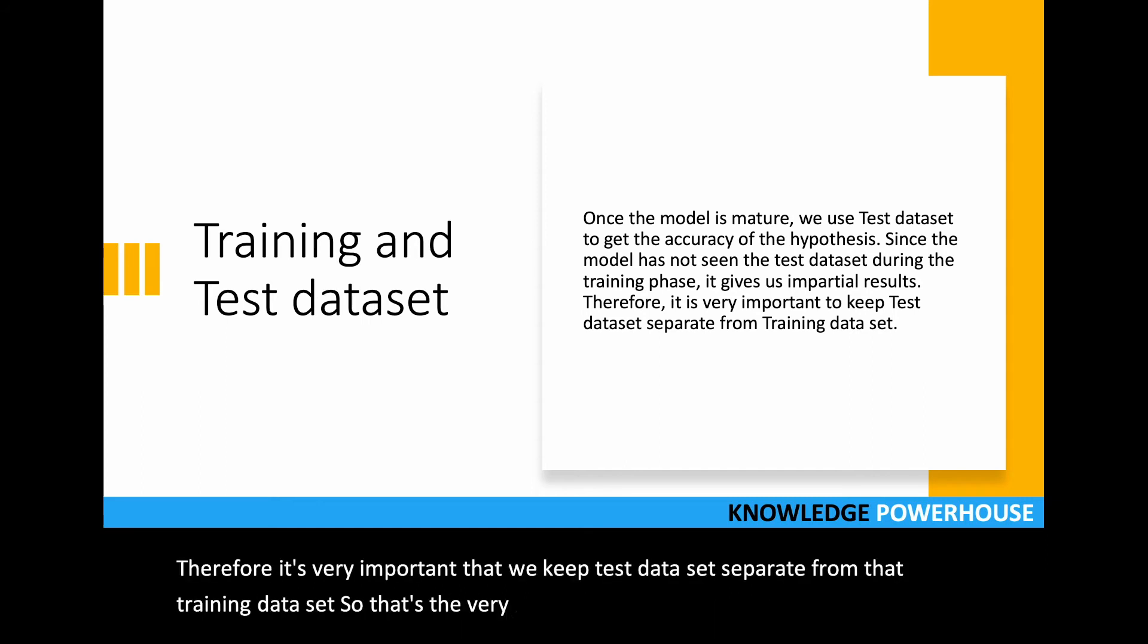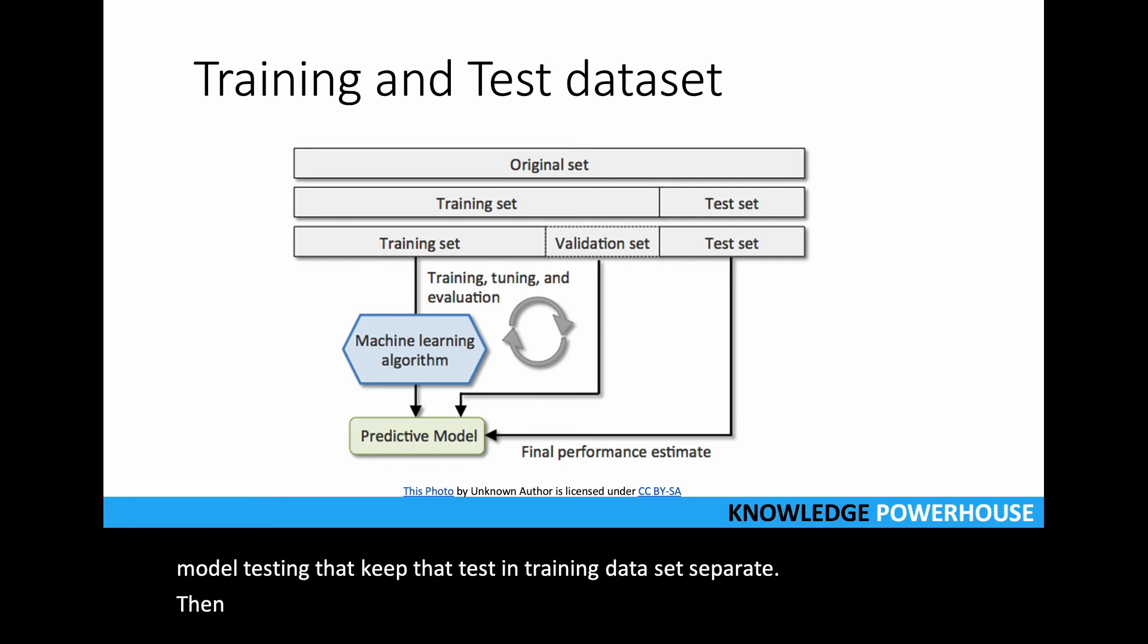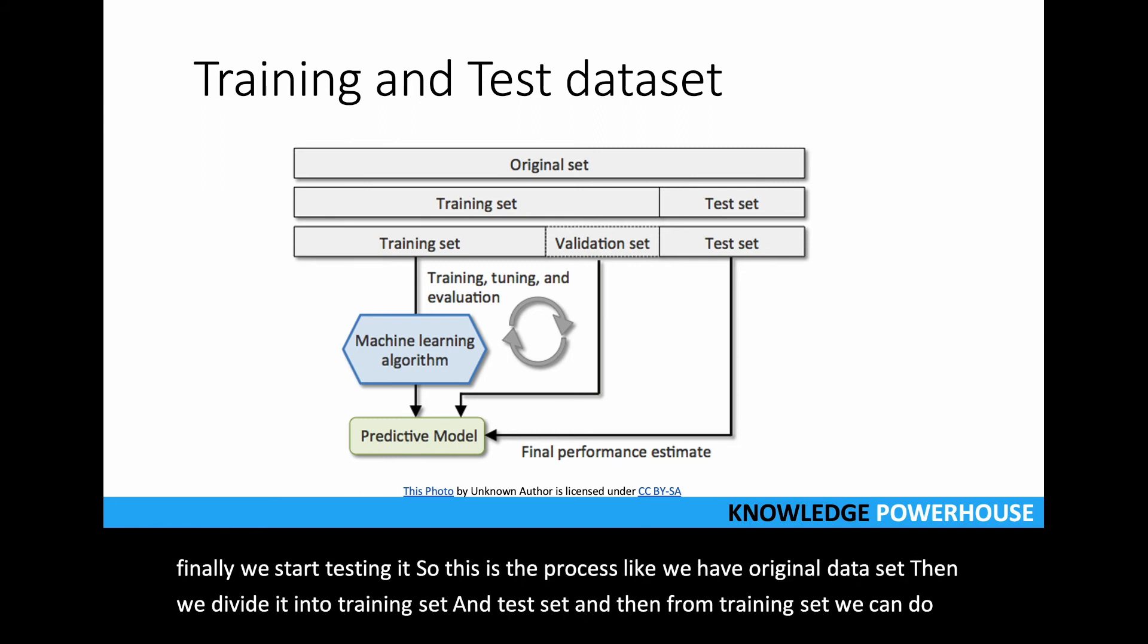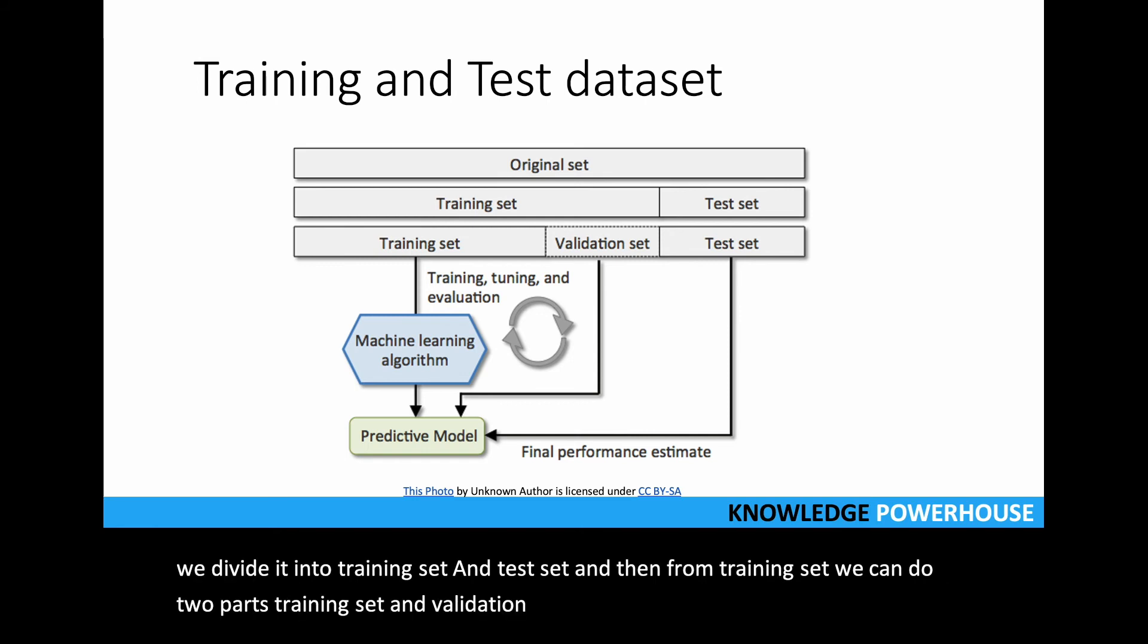Another way is we actually divide it into three parts: training set, validation set, and test set. In this case we train it, then validate using the validation set, and finally start testing. This is the process: we have original dataset, divide it into training and test set, then from training set we can do two parts - training and validation. We have k-fold cross validation and different techniques by which we can use the validation of our dataset.